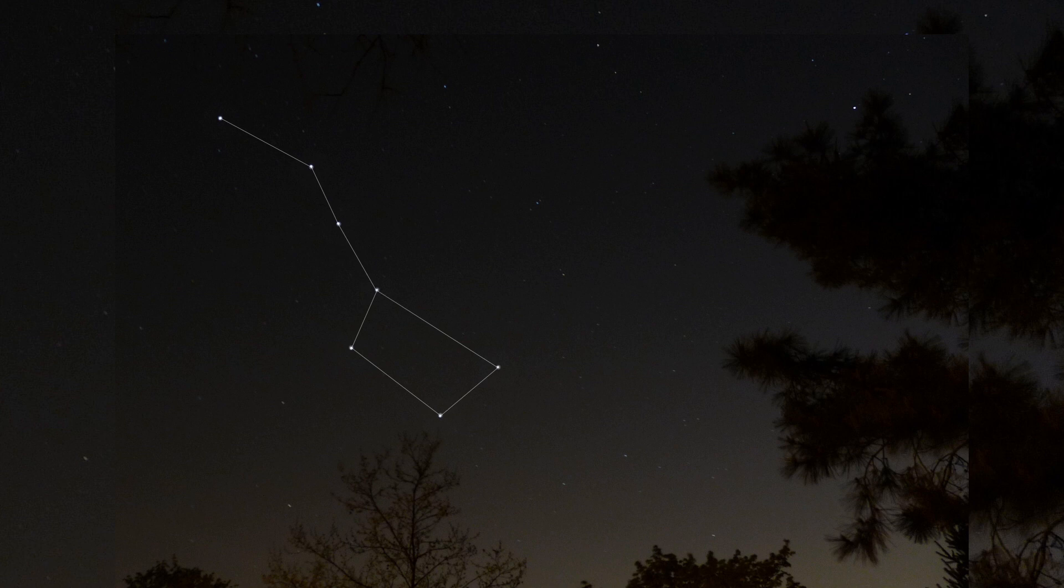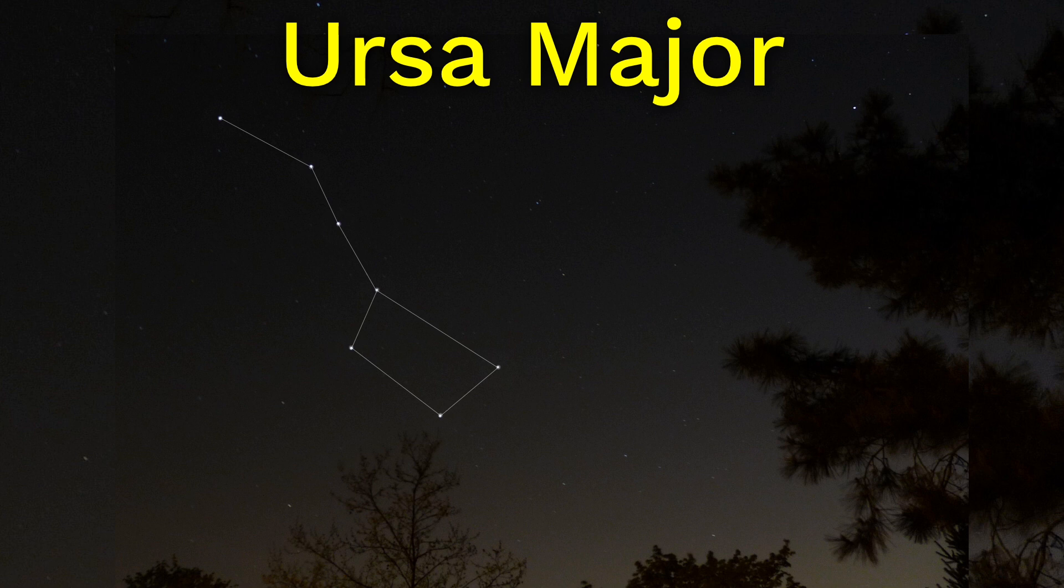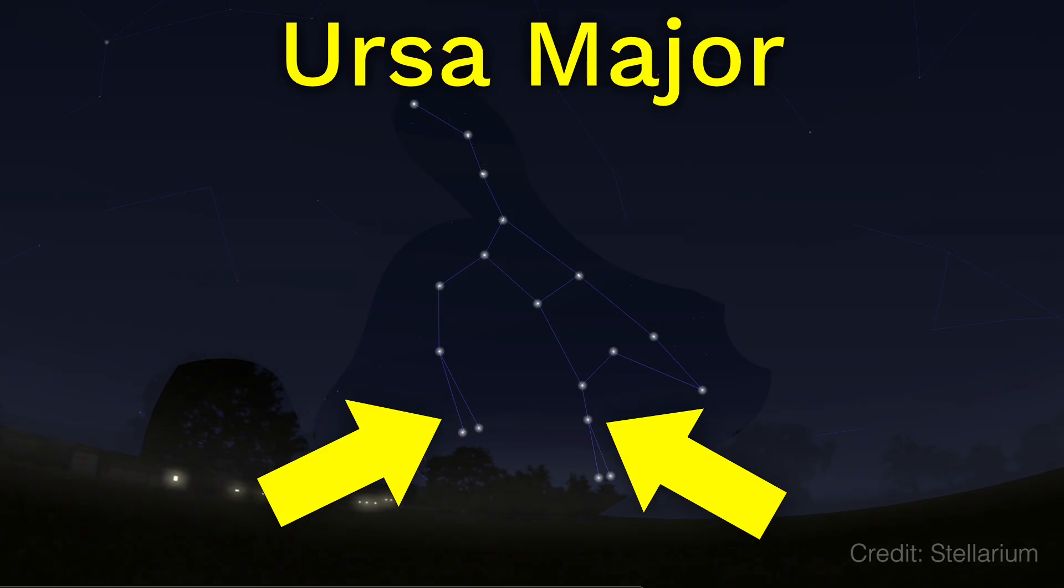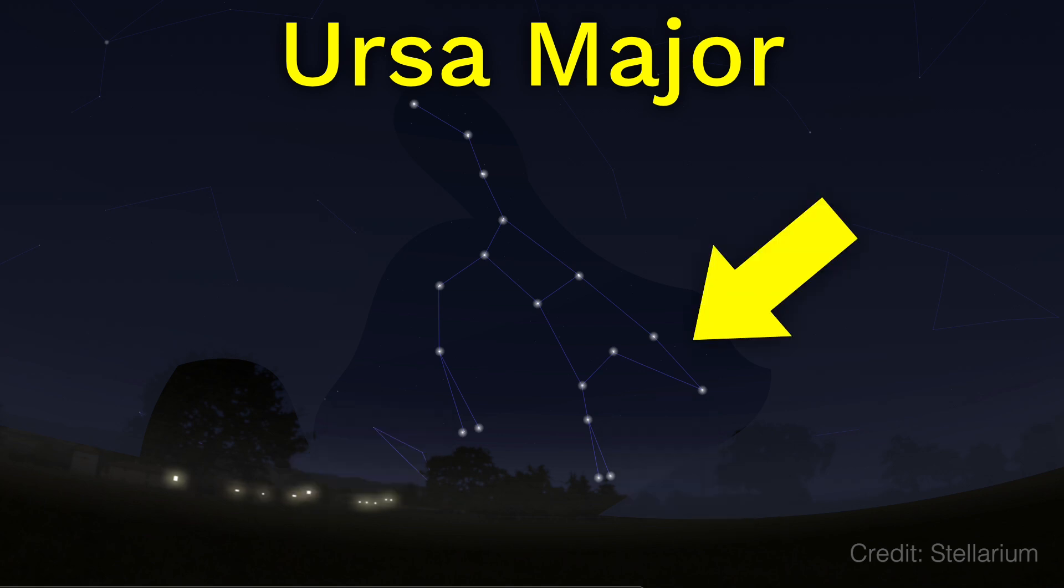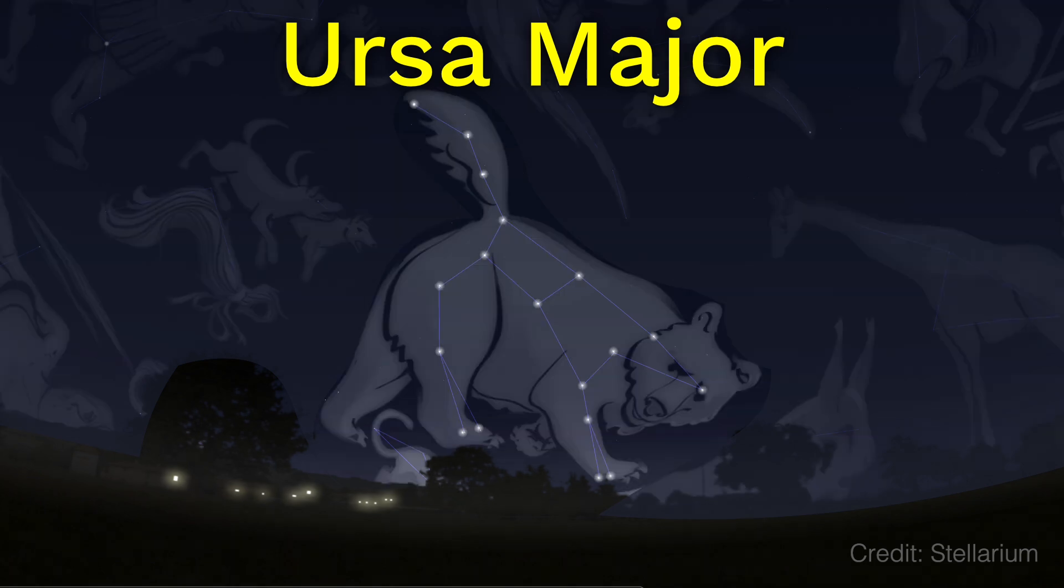Officially, scientists consider this one to be Ursa Major, the Big Bear, including these stars here to be the bear's legs, these stars to be the bear's head, and these three stars imagined to be the bear's tail. Whoa, that's a pretty strange looking bear.